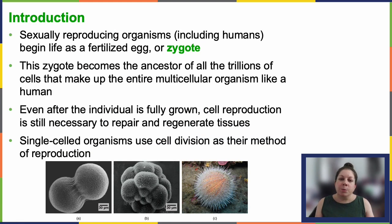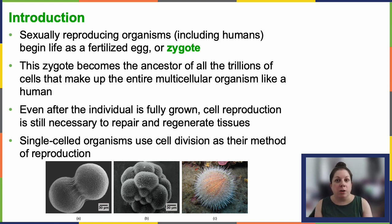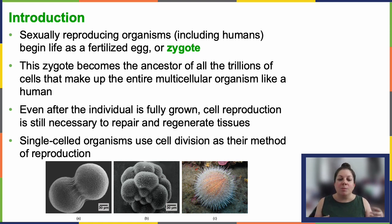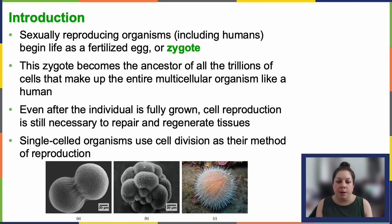Sexually reproducing organisms, like humans, originate as a fertilized egg called the zygote. Controlled cell division follows that, yielding the complex multicellular organism that we and other multicellular organisms can become. Essentially, that initial cell — the zygote — serves as the ancestor to all the other cells that will make up your body.